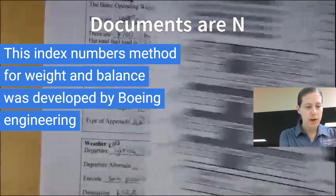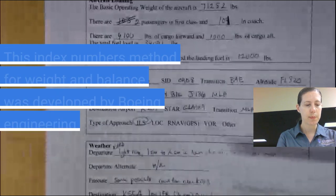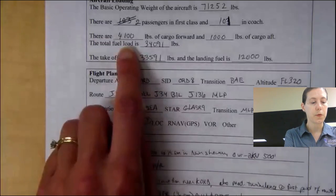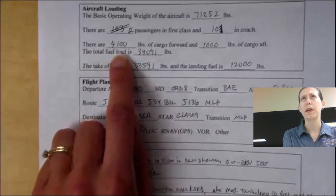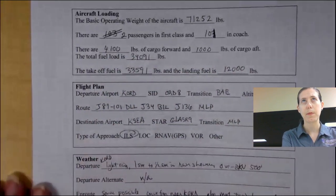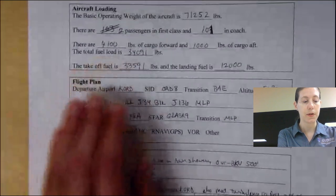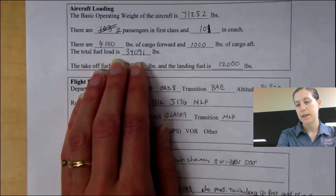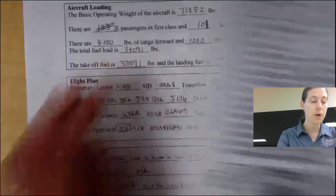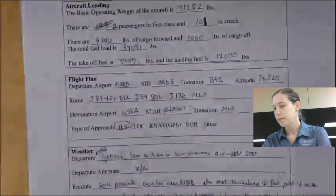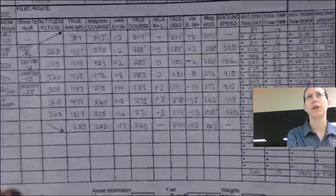So we do have plenty of fuel. We've got 4,100 pounds in the forward cargo bin and 1,000 in the aft. It can be reloaded a little bit to move the center of gravity farther aft. I also actually added a little more fuel than I had initially planned because of a headwind I expect you're going to encounter.